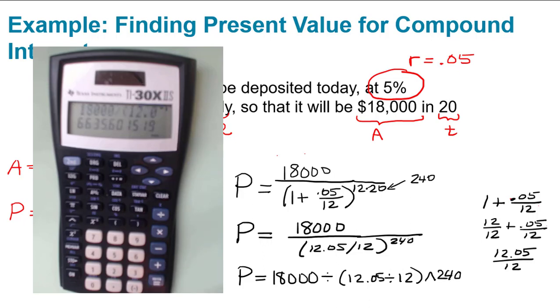Hit equals, and rounding off to two decimal places to the nearest cent, we have $6,635.60.